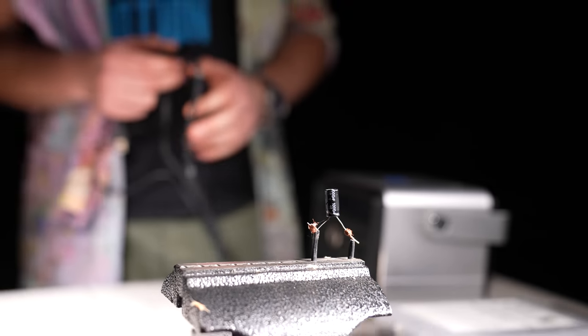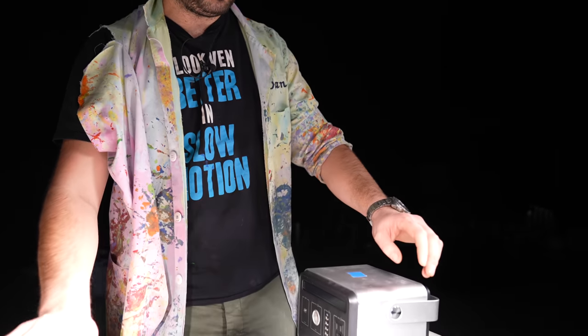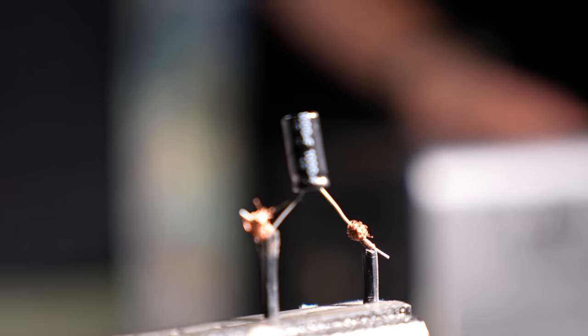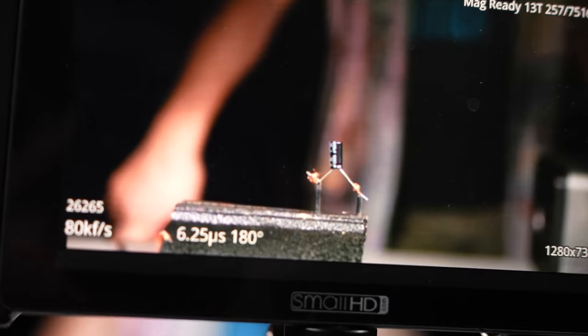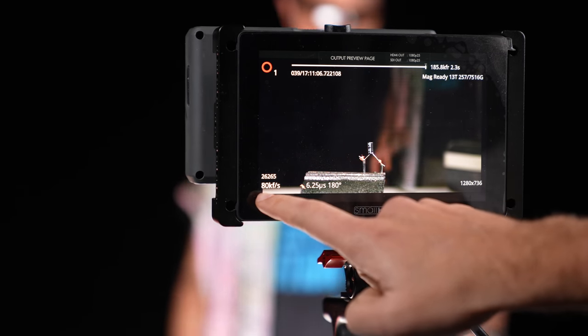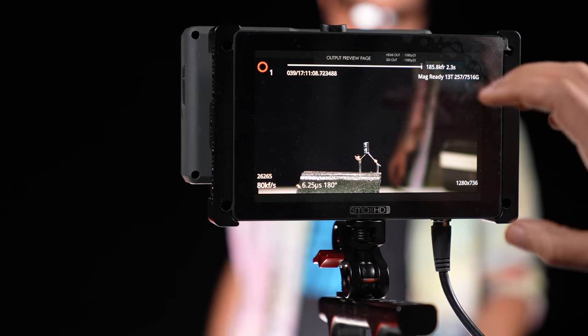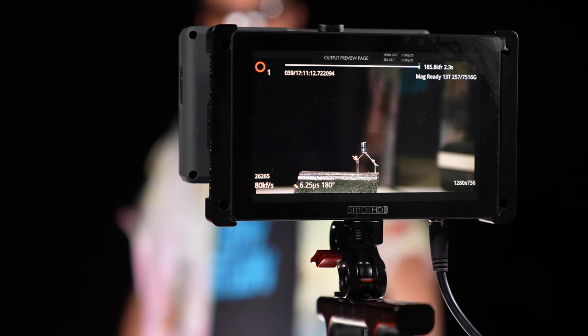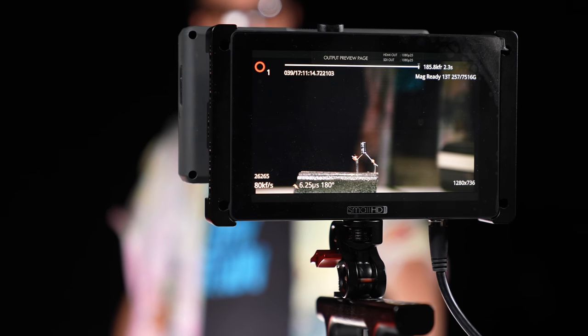So this is a 1000 microfarad capacitor, 16 volts. I've become very used to this symbol, the little lowercase U, meaning micro. Oh, you do a lot of micro, don't you? It's on here as well. All right, I'm set to 80,000 frames a second on this first one, pretty wide, and our exposure time is six and a quarter microseconds.